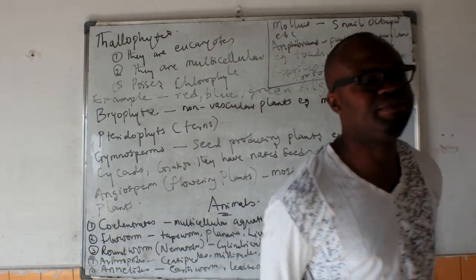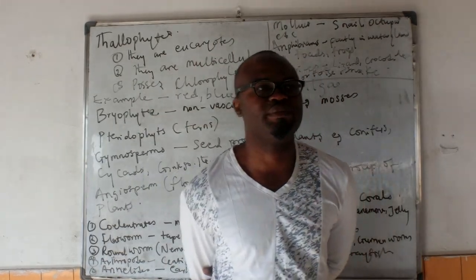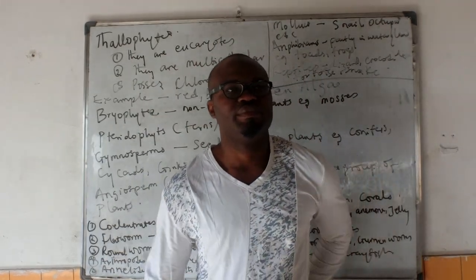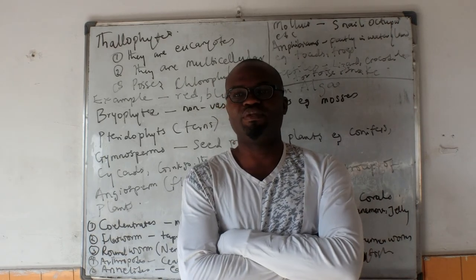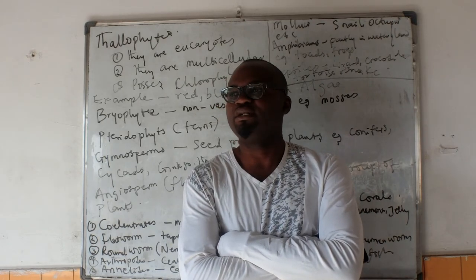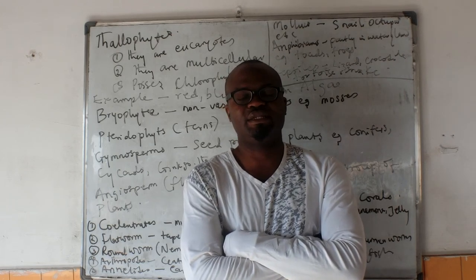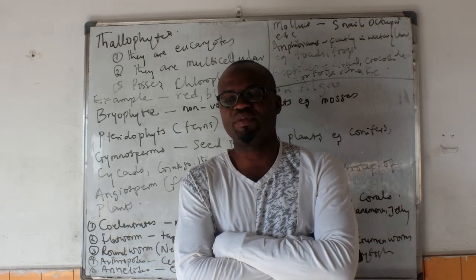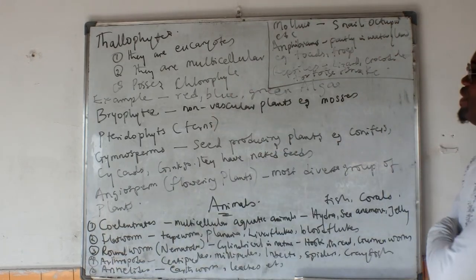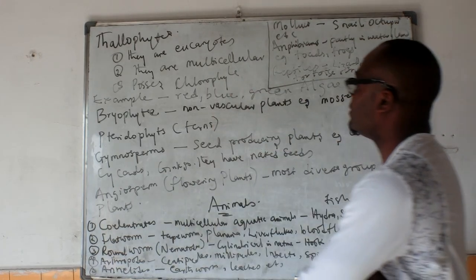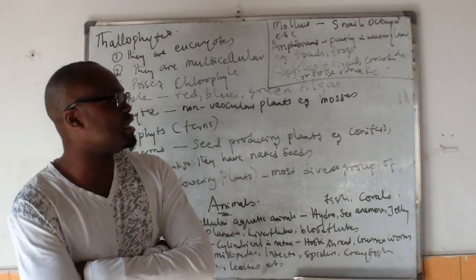Those are the major examples under these various classifications. You are supposed to know them very importantly — exam questions can always pop out on them. You will be asked which of the following animals is not supposed to be under a given class, and you are supposed to know similar animals that are supposed to be under that very classification. So under reptiles, you are supposed to have animals like lizard,